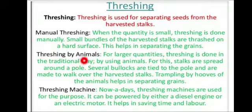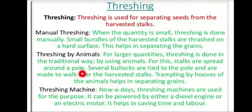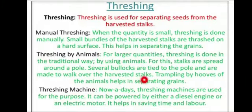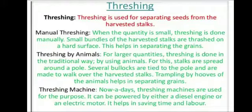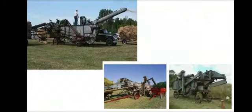For larger quantities, threshing is done in the traditional way using animals. Stalks are spread around a pole, and several bullocks are tied to the pole and made to walk over the harvested stalks. Trampling by the hooves of the animals helps in separating the grains. Nowadays, threshing machines powered by either a diesel engine or an electric motor are used, helping save time and labor.